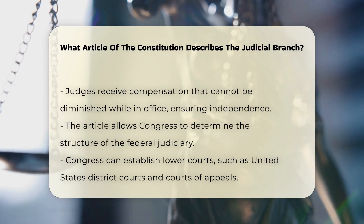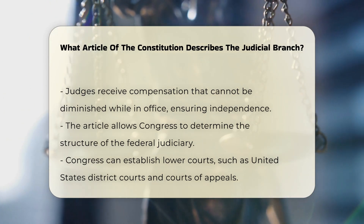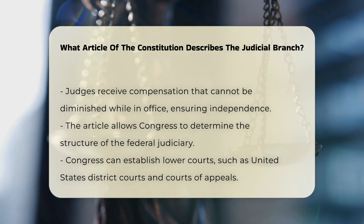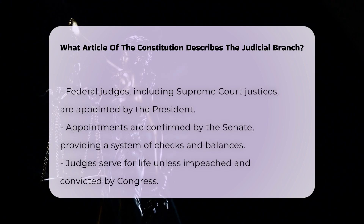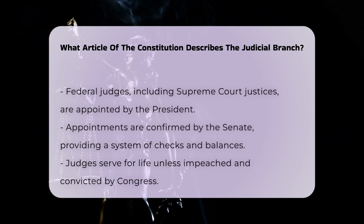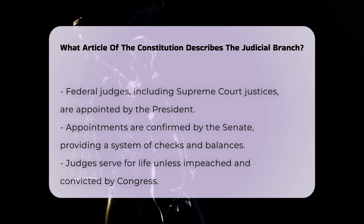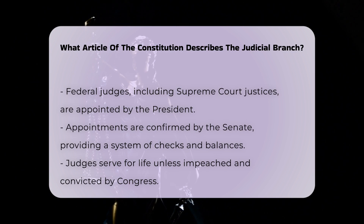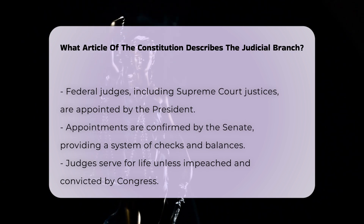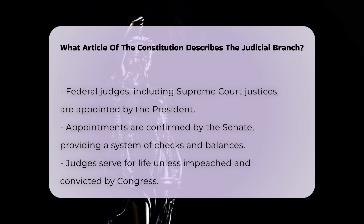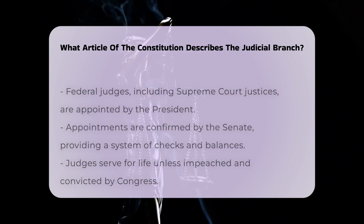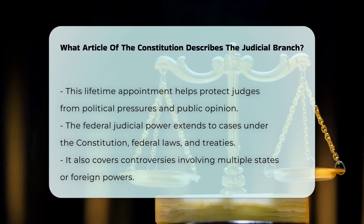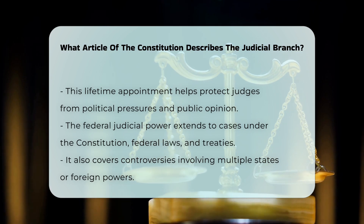This provision is designed to ensure judicial independence, allowing judges to decide cases based on the law without fear of political or financial repercussions. The article also grants Congress significant discretion to determine the shape and structure of the federal judiciary, including the establishment of lower courts such as the United States District Courts and the United States Courts of Appeals. Federal judges, including those of the Supreme Court, are appointed by the president and confirmed by the Senate. They serve for life unless they are impeached and convicted by Congress, which helps to insulate them from temporary public passions and political pressures.